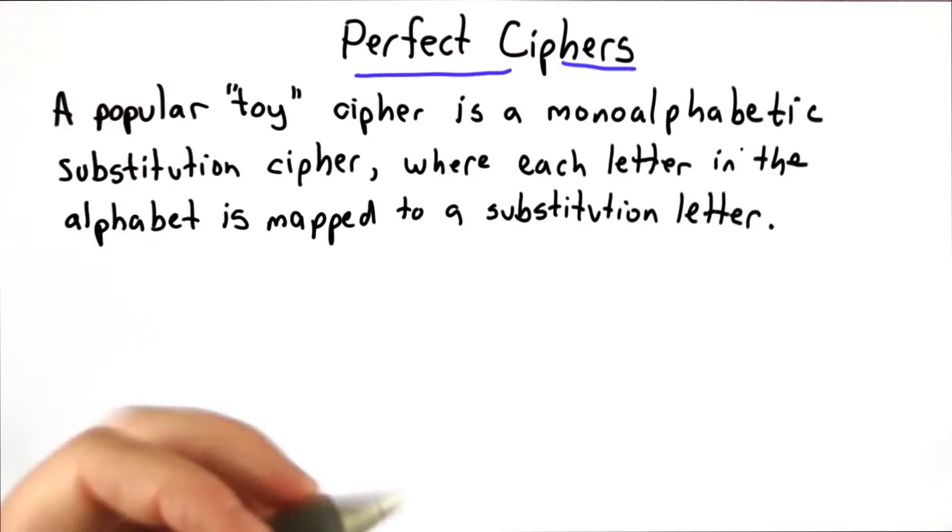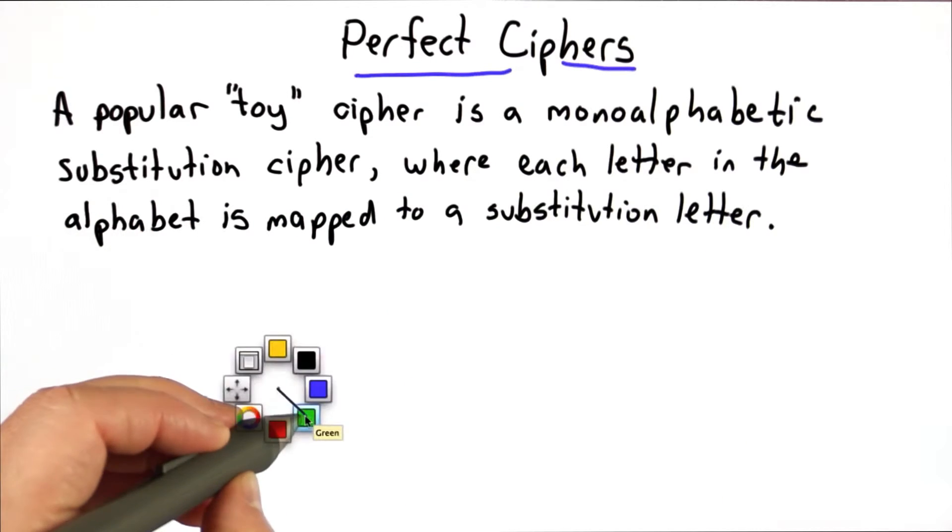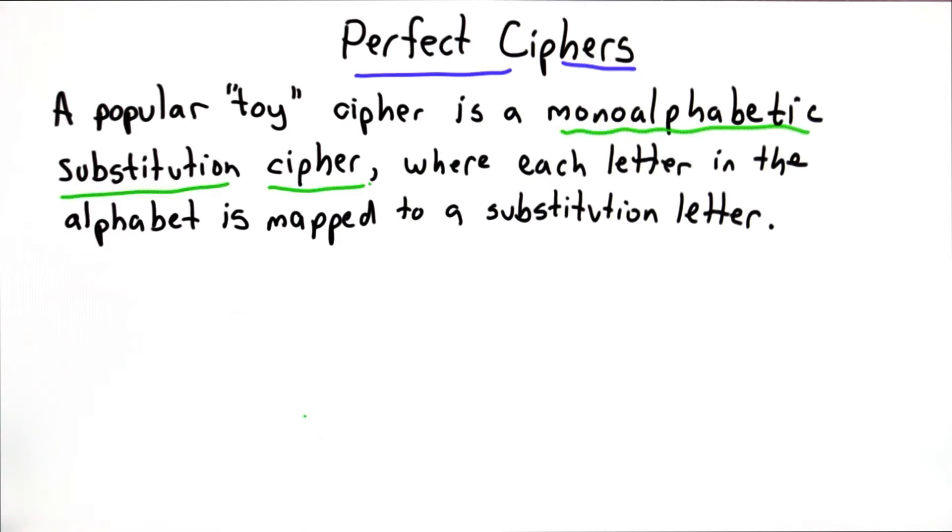A popular toy cipher is a monoalphabetic substitution cipher where each letter in the alphabet is mapped to some substitution letter.